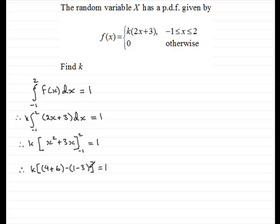Working this out inside the brackets, we've got 10 minus minus 2, so that's in fact going to be 12. So therefore we've got 12k equals 1. And that brings us to k equals 1 twelfth. Okay, so that's the value of the constant k.